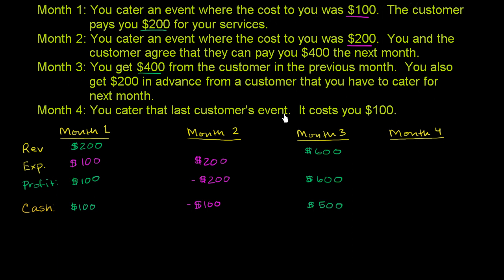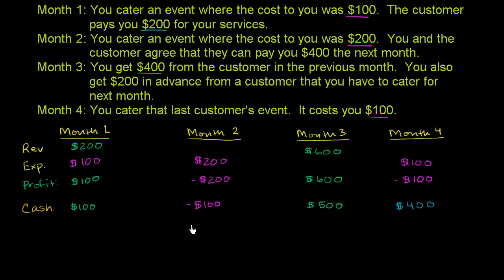In month four, you cater the last customer's event. It costs you $100. You just have to spend $100 to cater the actual event, but you got no revenue in that month. So it looks like you took a loss of negative $100, and your cash balance goes down to $400. This is the cash basis — how a lot of businesses run it. But as you can see, there's a problem: it looks like our profit is jumping all over the place, sometimes profitable, sometimes not, even though our business is a little bit steadier than that would seem to imply.